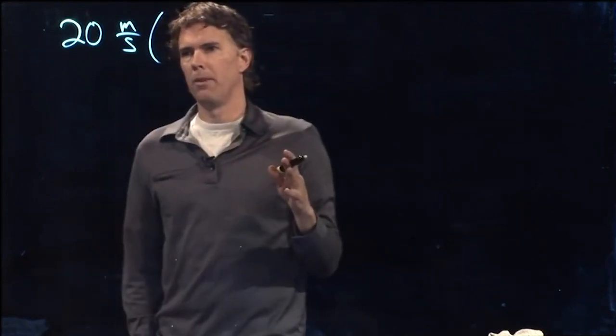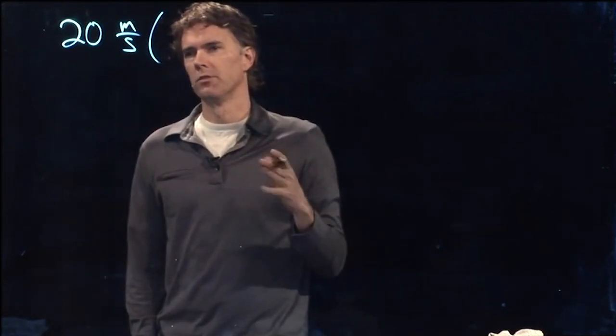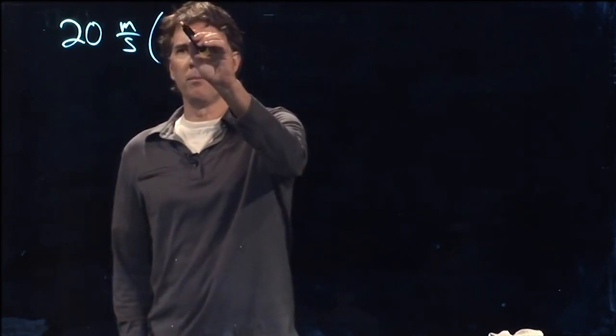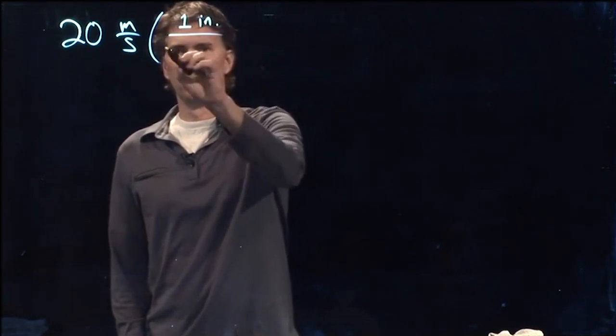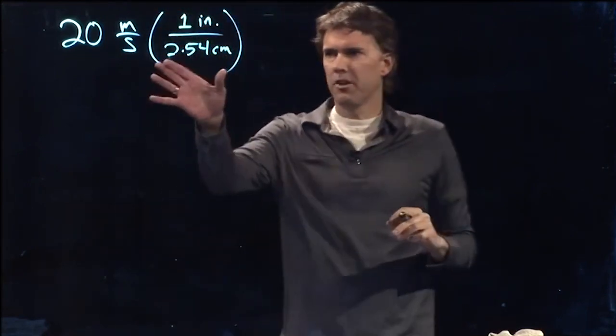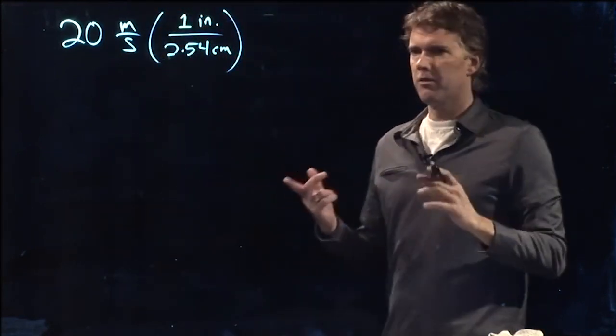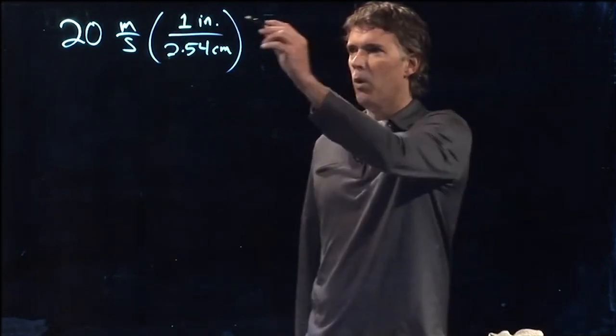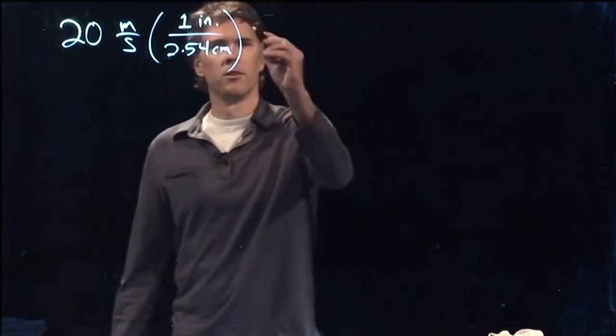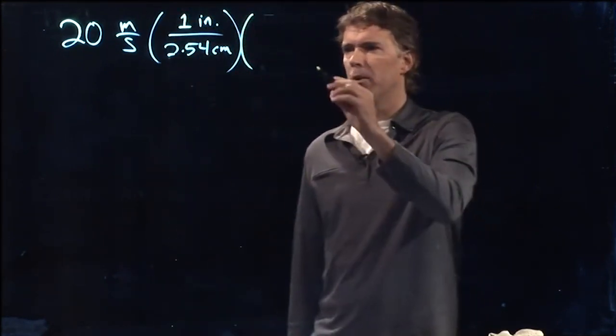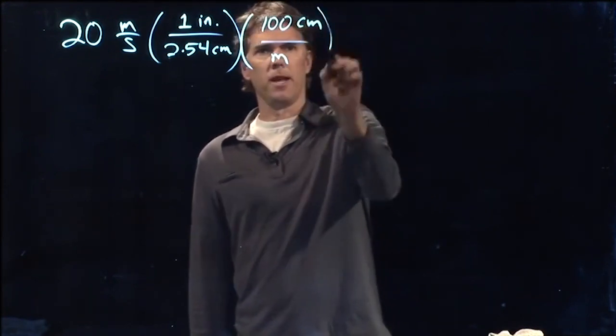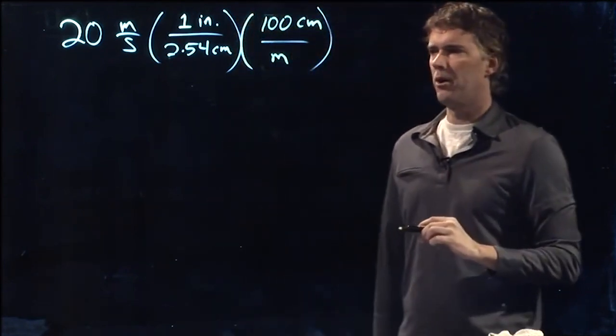So what do we remember about, say, centimeters to inches? That's one thing that maybe we remember. And what we remember is that one inch is 2.54 centimeters. This stuff here in parentheses is the number one. One inch over 2.54 centimeters, that's the number one. It's just in these funky units. But that doesn't quite get us where we need because we have to get centimeters out of there. So we remember that is 100 centimeters per meter.